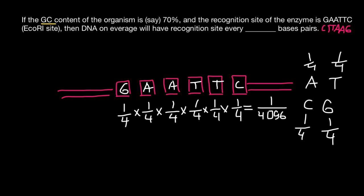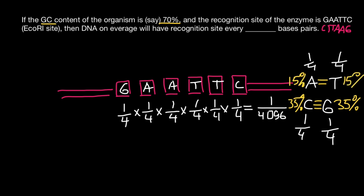But what if GC content — guanine and cytosine — is 70%? That means guanine and cytosine form base pairs with triple hydrogen bonds, and adenine and thymine form base pairs with double hydrogen bonds. If GC content is 70%, then 35% is cytosine and 35% is guanine. The remaining 30% is adenine and thymine — so 15% adenine and 15% thymine.